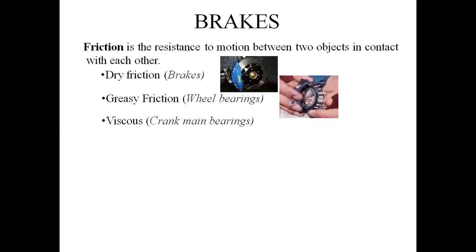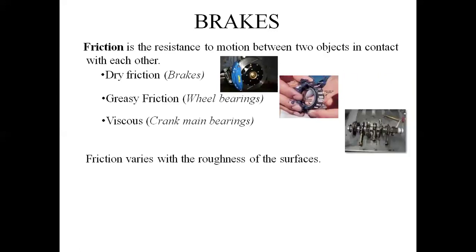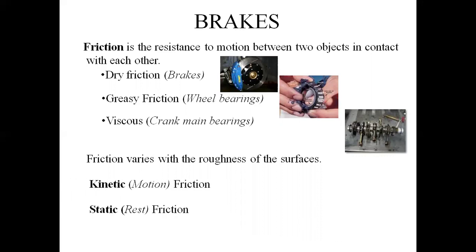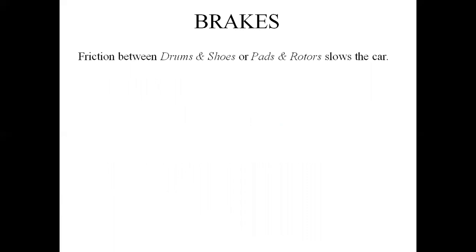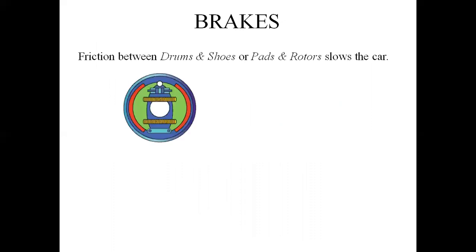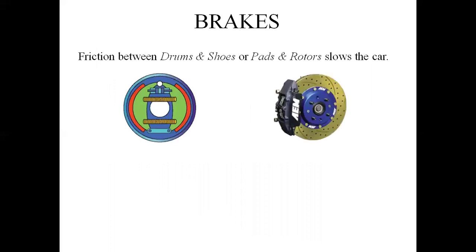Third is viscous friction. Friction varies with the roughness of the surface, and different surfaces have different friction values as per the material. Then there is static friction and kinetic friction. Friction between the drum and shoes, or pads and rotors, is used to restrict the motion of the car.